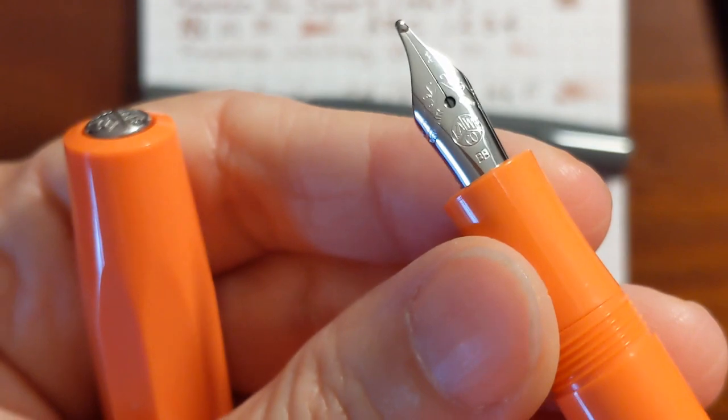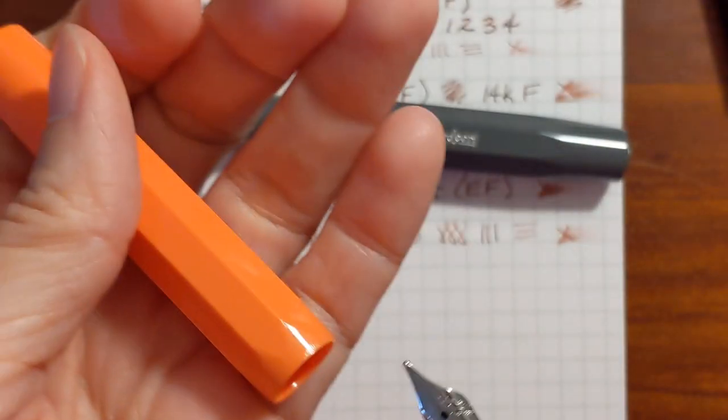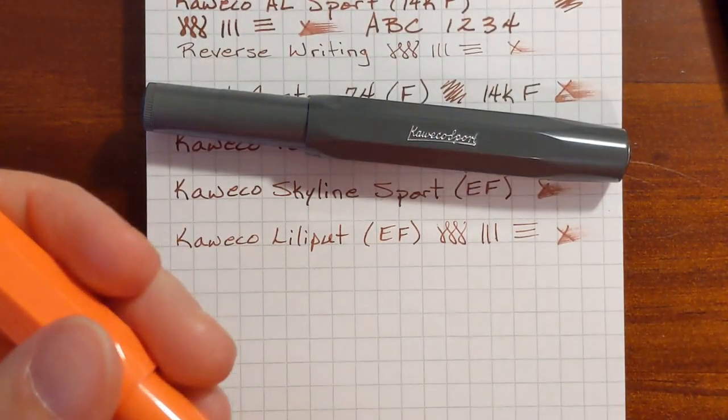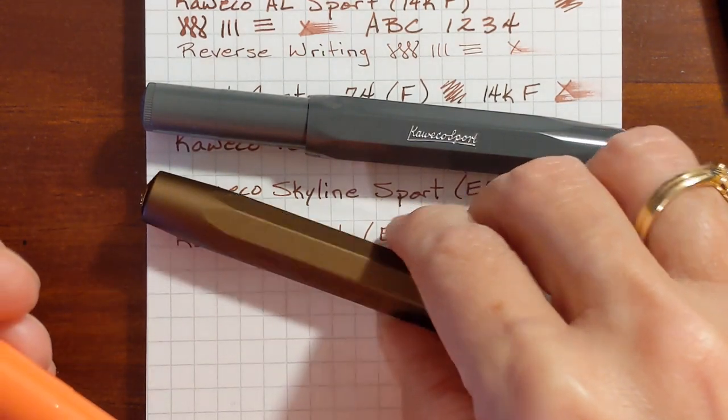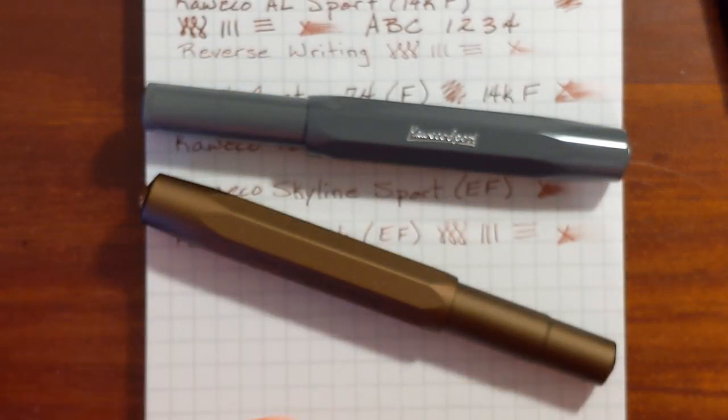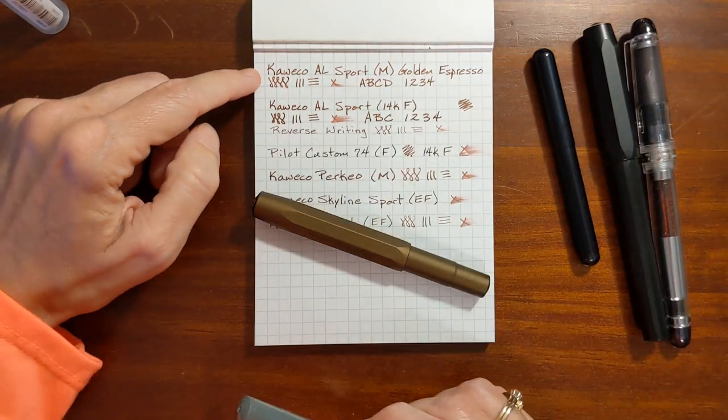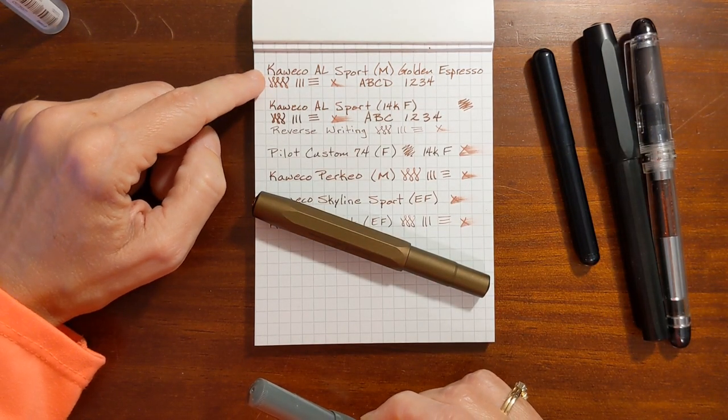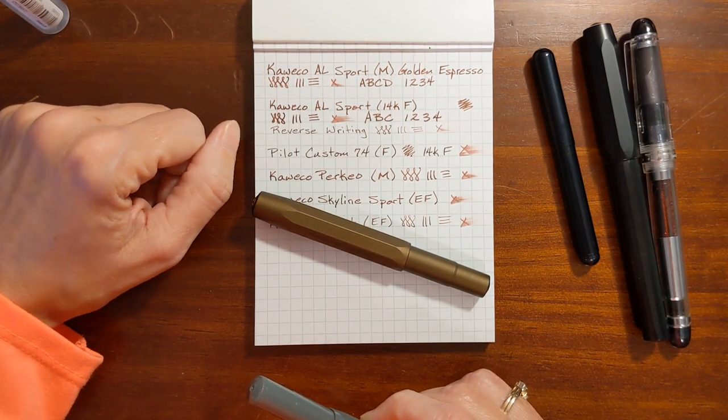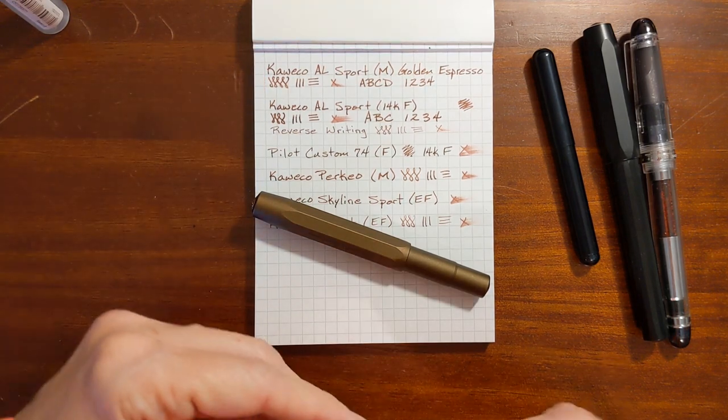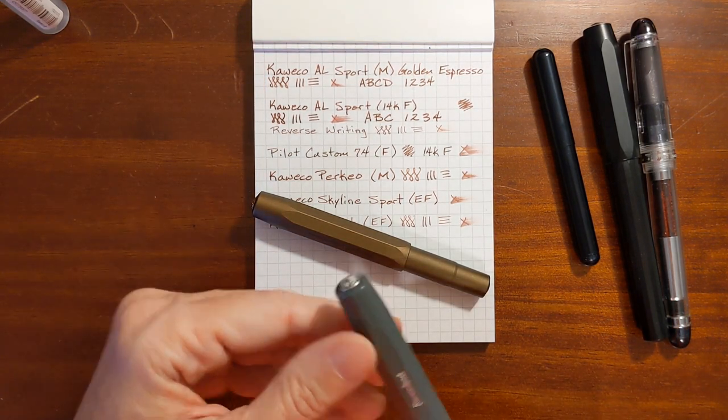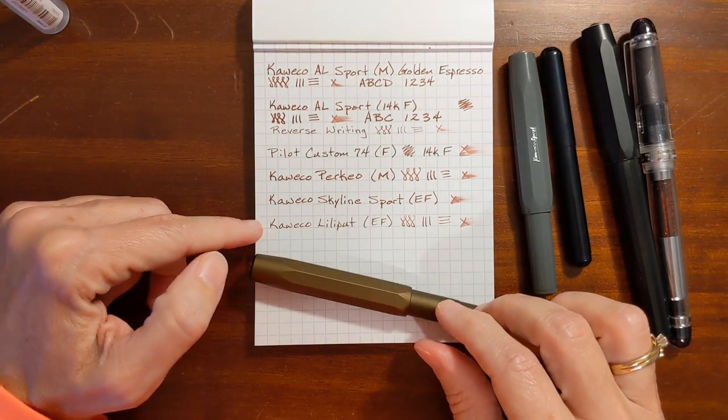This one has a double broad nib, look at all that tipping. At some point I would like to get a double broad nib unit for my AL Sport but I'll have to get one that's gold plated. When I tested this medium nib I thought well I might just use this medium nib for a while, I'm enjoying it so much.